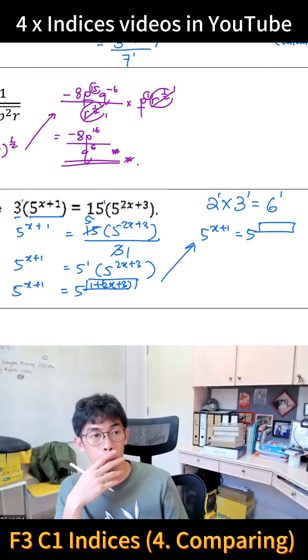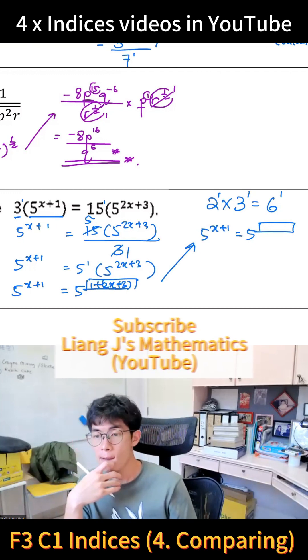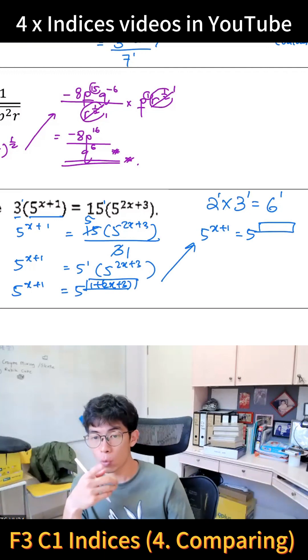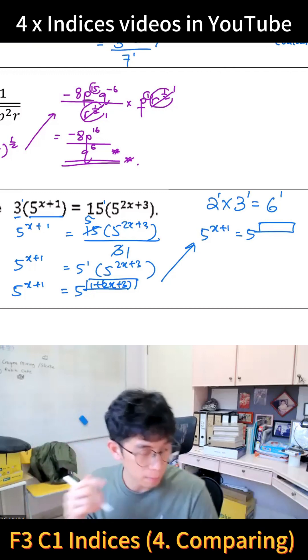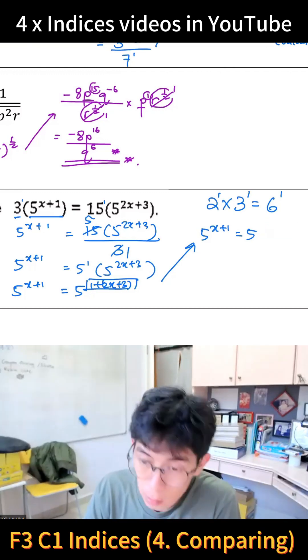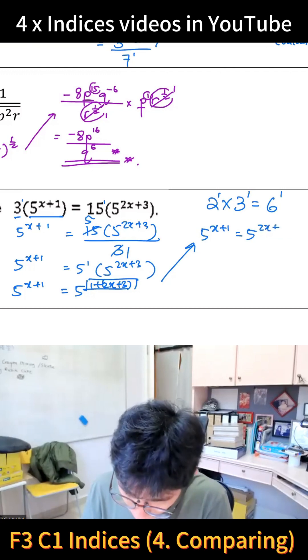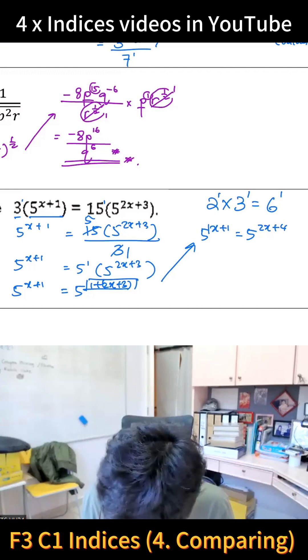2x plus 4. Thank you. And then we can compare - we can compare this part and this part. So therefore x plus 1 equals 2x plus 4.